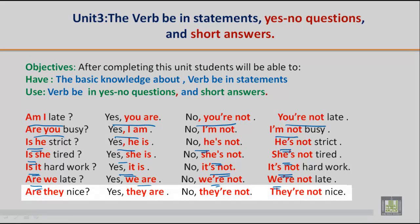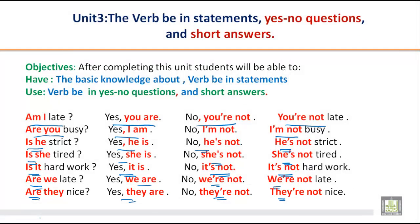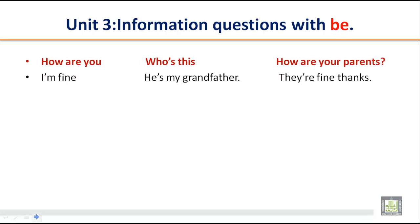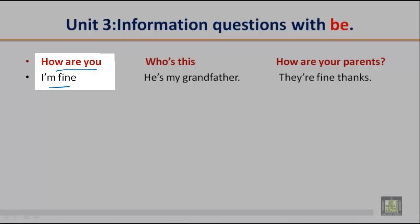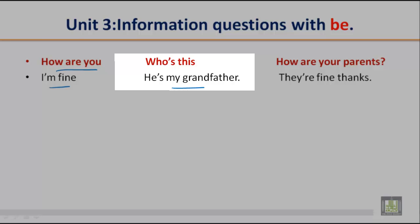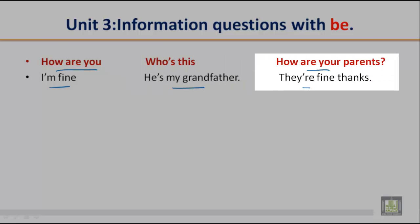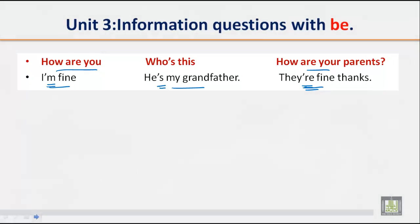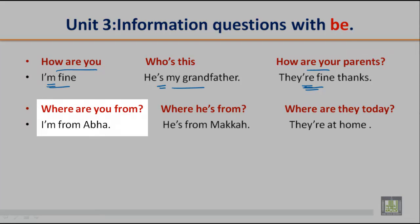'Are they nice? Yes, they are. No, they are not. They are not nice.' Now let us move to the next part of this unit. Here we will ask information questions with 'be,' like: 'How are you? I'm fine.' 'Who is this? He is my grandfather.' 'How are your parents? They are fine.' 'Where are you from? I'm from Abha.'